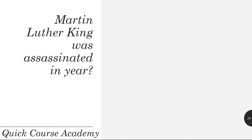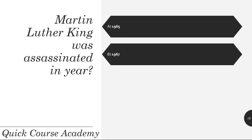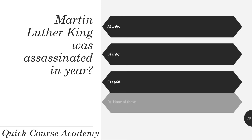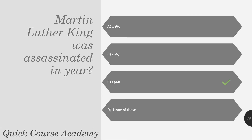Martin Luther King was assassinated in the year 1965, 1967, 1968, or 1916? And the correct answer is 1968.